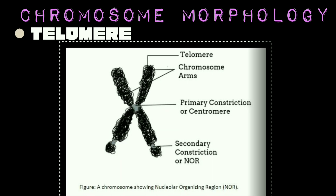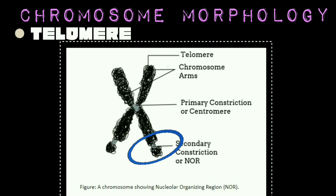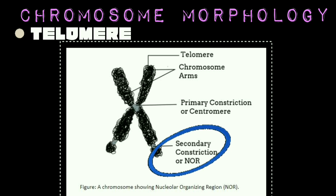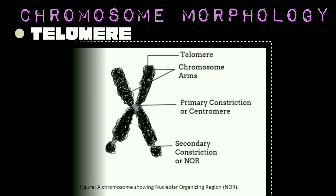In some chromosomes, a second constriction in addition to that of the centromere is also present. This additional constriction is known as the secondary constriction. The chromosome region distal to the secondary constriction — that is, the region between the secondary constriction and the nearest telomere — is known as the satellite. Therefore, chromosomes having secondary constrictions are called satellite chromosomes or SAT chromosomes. It should be noted that SAT DNA is not related to SAT chromosomes; SAT DNA is present in the centromere region of all chromosomes. Human somatic cells have 10 SAT chromosomes. The nucleolus is always associated with secondary constrictions, so secondary constrictions are also called Nucleolus Organizer Regions (NOR), and SAT chromosomes are often called Nucleolus Organizer Chromosomes. The NOR of each SAT chromosome contains several hundred copies of the gene coding for ribosomal RNA.